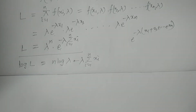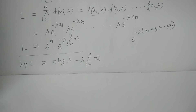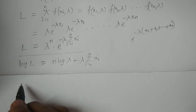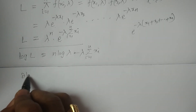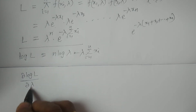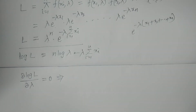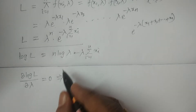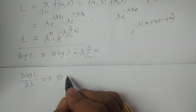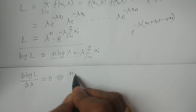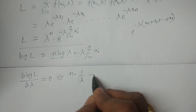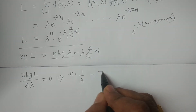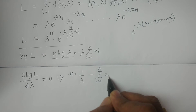Now we have to obtain the MLE for lambda. We differentiate log L with respect to the parameter lambda and equate to 0: d/d(lambda) of log L = 0. Differentiating, n · (1/lambda) minus summation xi equals 0, since d/d(lambda) of n·log(lambda) = n/lambda and d/d(lambda) of lambda·Σxi = Σxi.